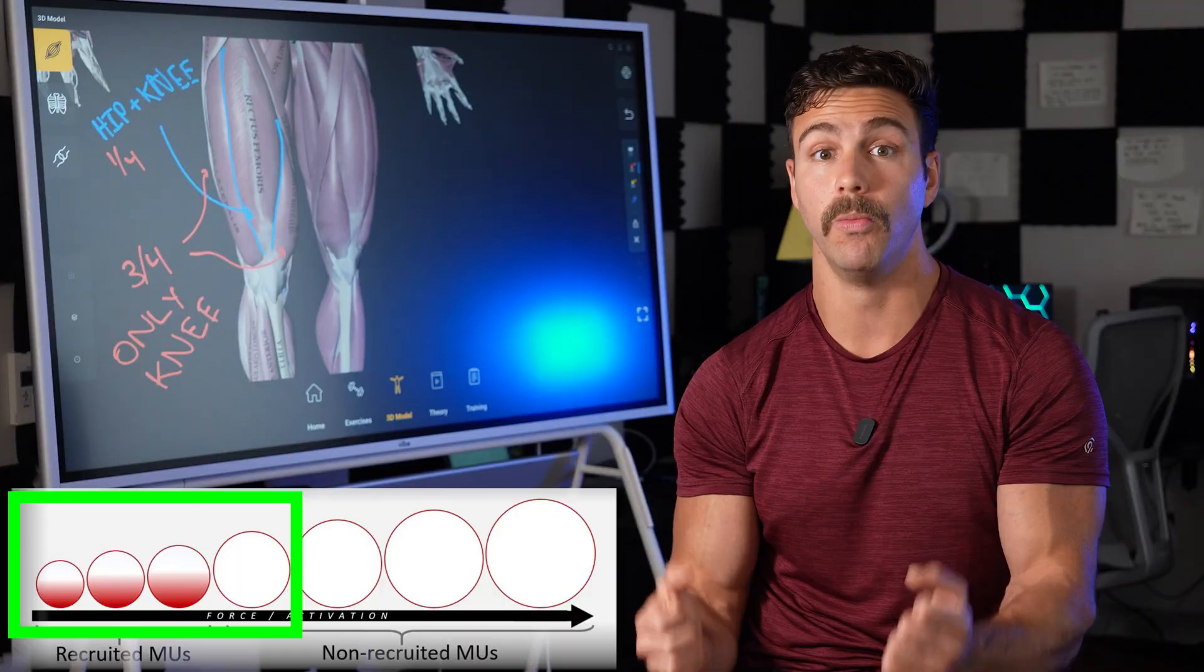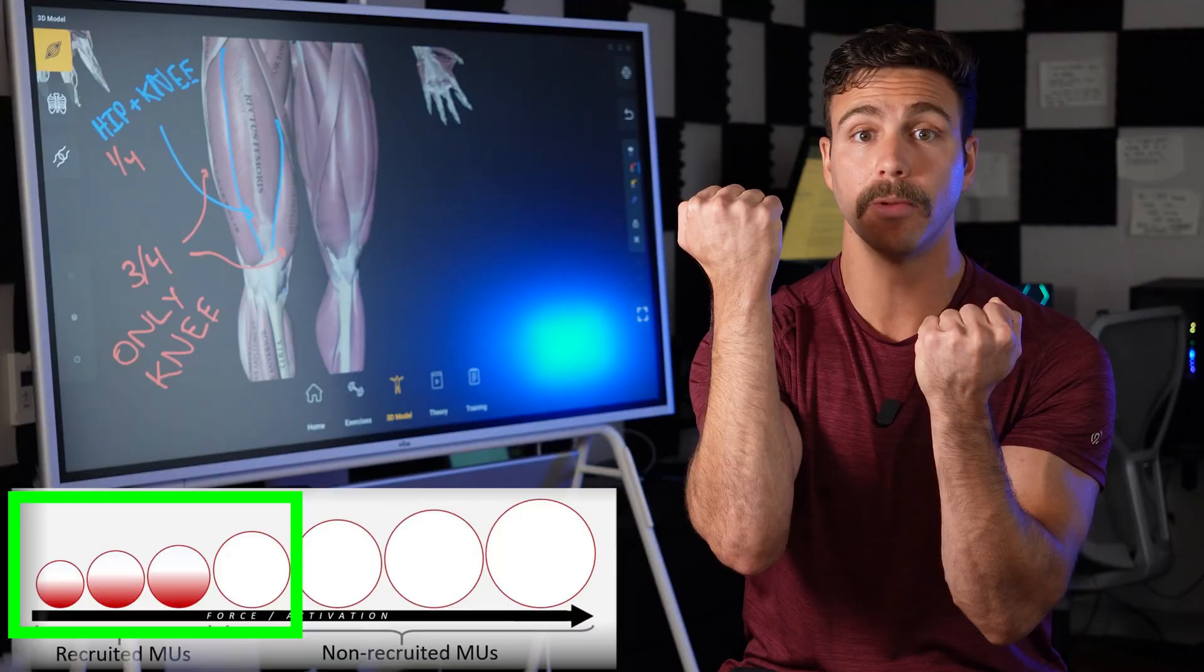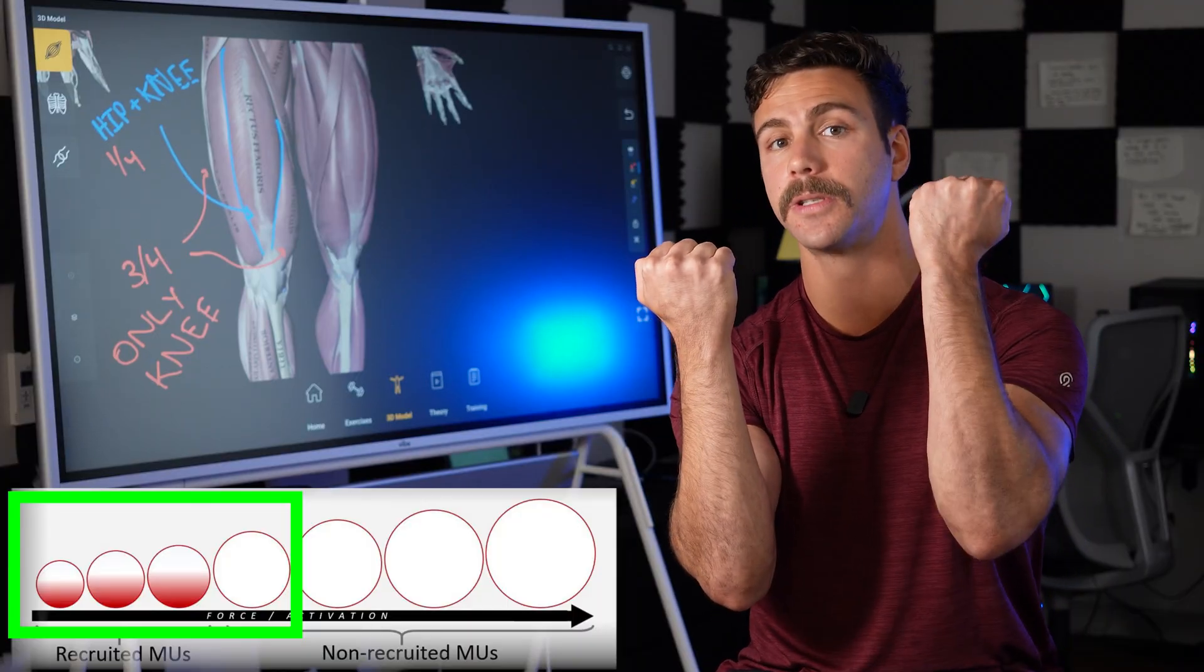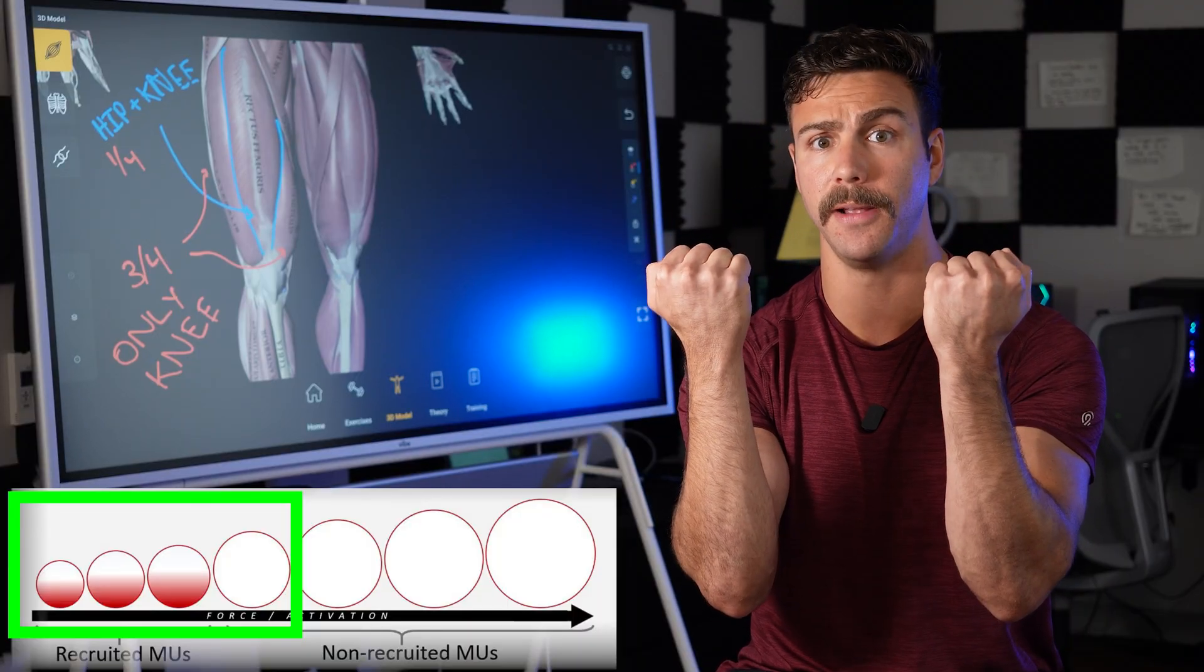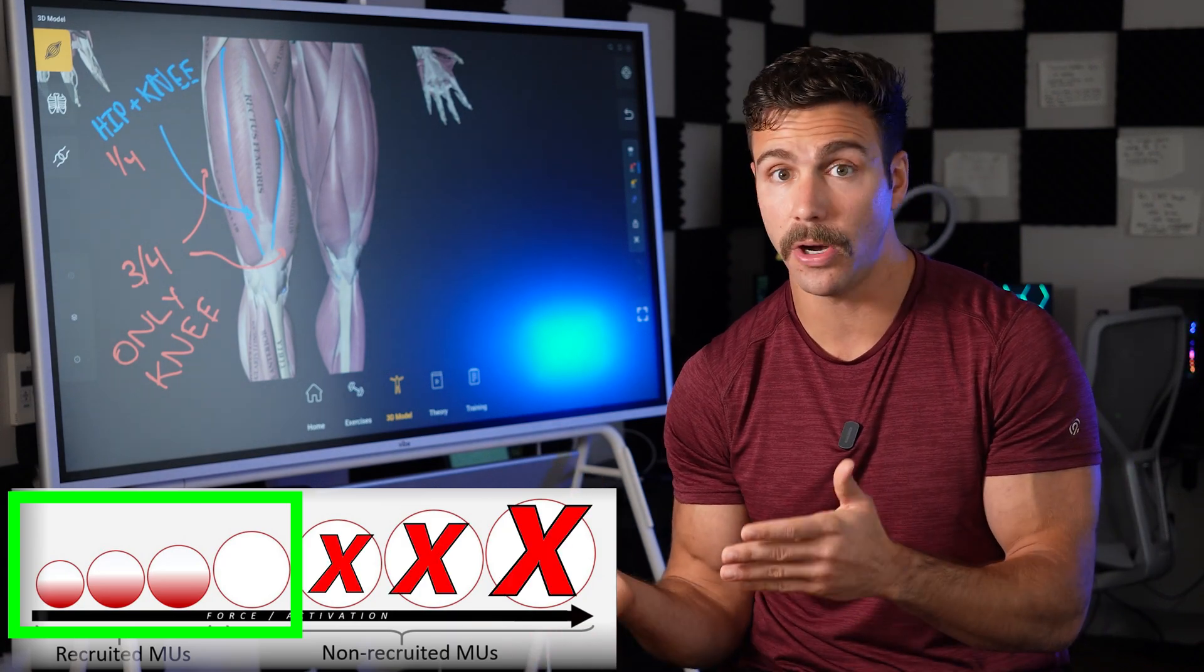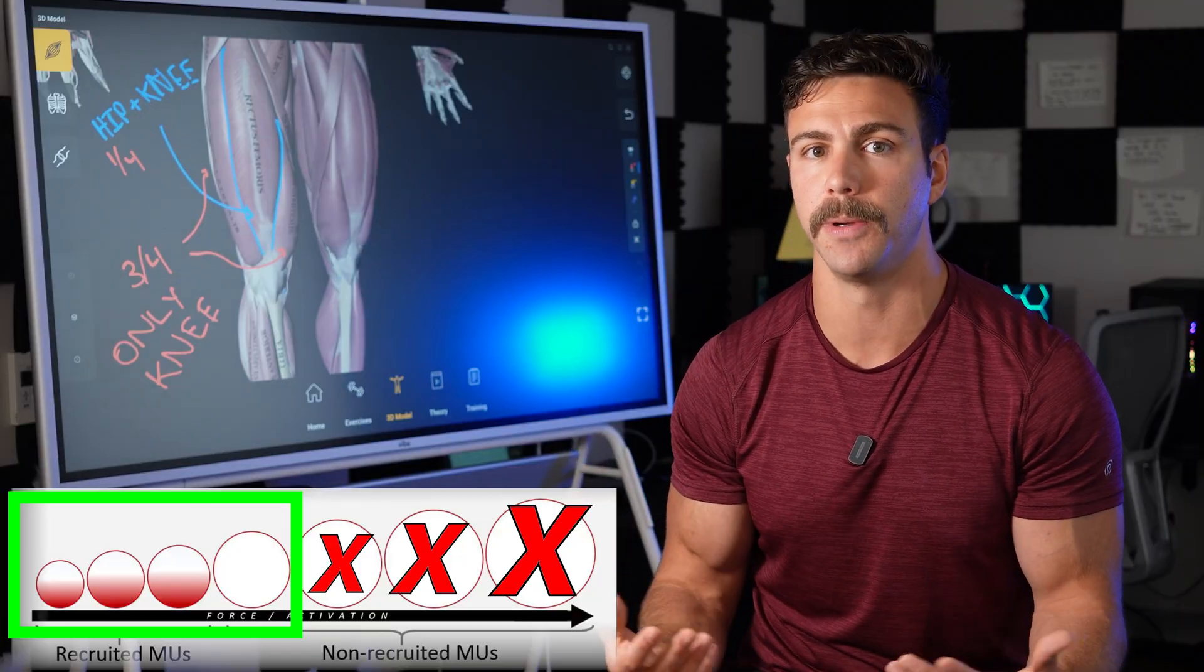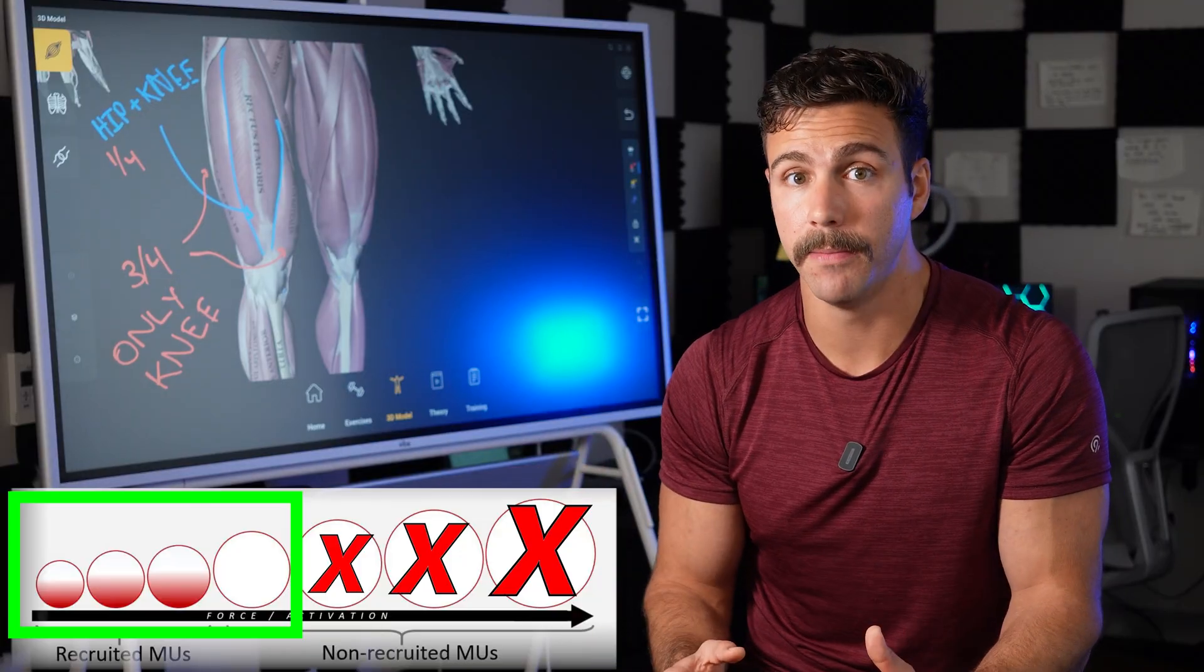And remember, what makes these reps effective is high degrees of motor unit recruitment and slowing down of the contraction velocity. So if half the muscle fibers that we had turned on in the previous set are no longer turned on, there's no way they're going to experience growth. And on top of that,